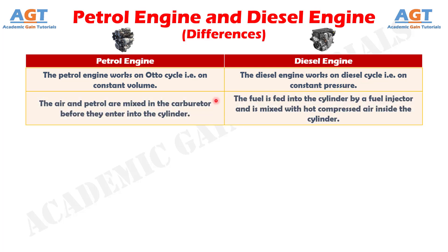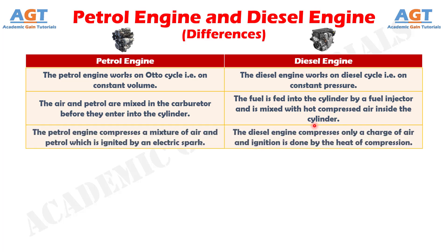Number 2: in a petrol engine, the air and petrol are mixed in the carburetor before they enter into the cylinder, whereas in a diesel engine, the fuel is fed into the cylinder by a fuel injector and is mixed with hot compressed air inside the cylinder. Number 3: the petrol engine compresses a mixture of air and petrol which is ignited by an electric spark, whereas the diesel engine compresses only a charge of air and ignition is done by the heat of compression.